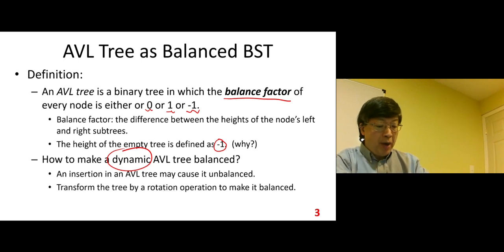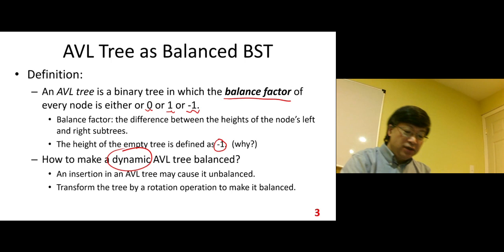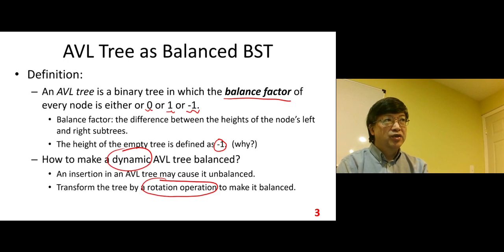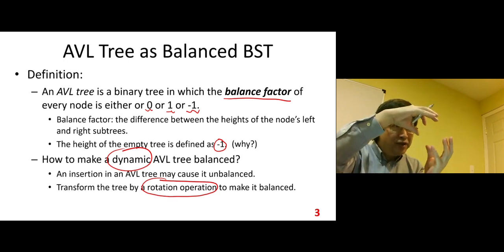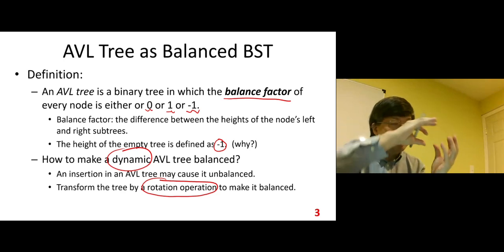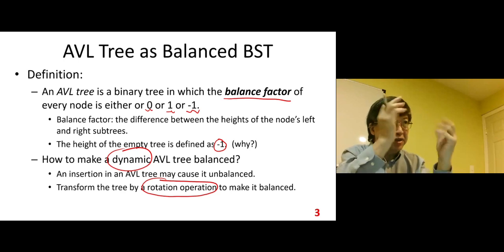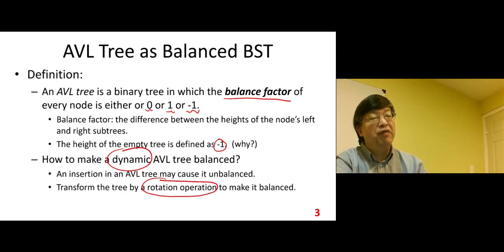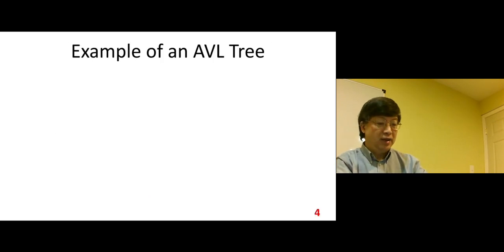Transform the tree by a rotation operation. A new type of operation called a rotation operation. We change the structure of the tree. Rotation - you can imagine we rotate a portion of the tree. How do we define that rotation? We will see the definition of the rotation to make it balanced.